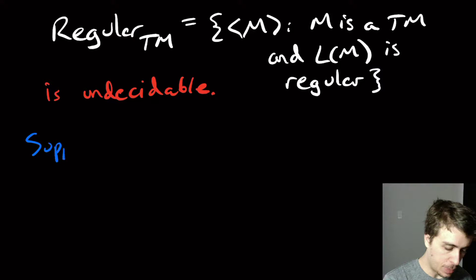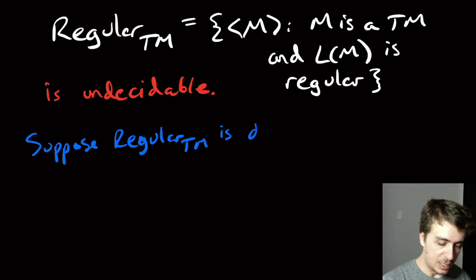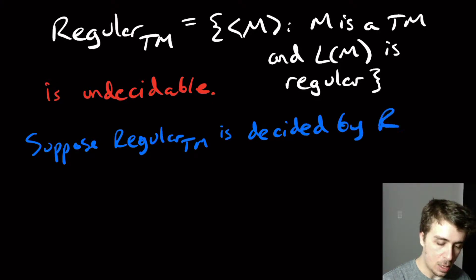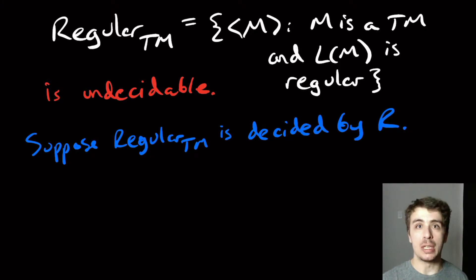So suppose that RegularTM is decidable and decided by R. R is a machine that will take a Turing machine and figure out whether it's regular or not. We're supposing that exists. We'll show that it doesn't exist, but we'll assume that it does.